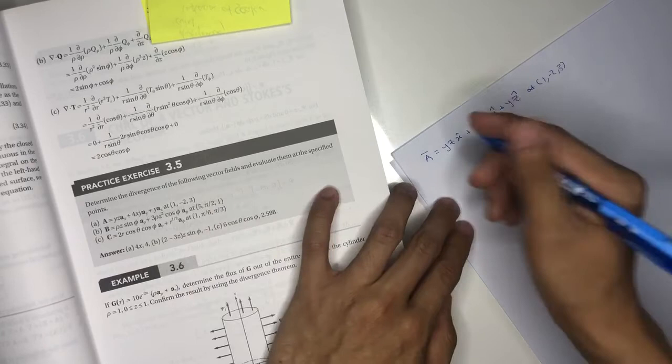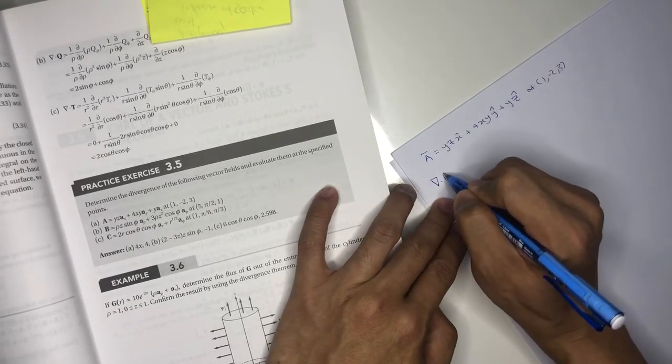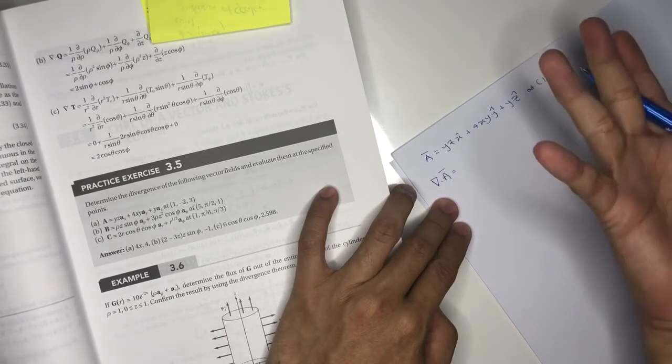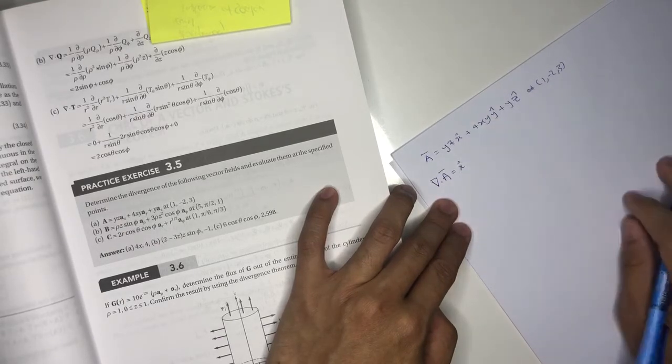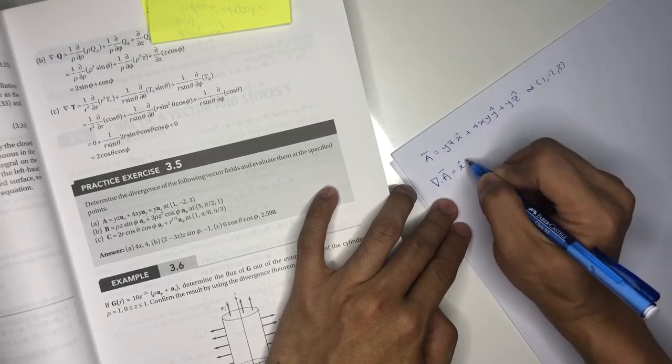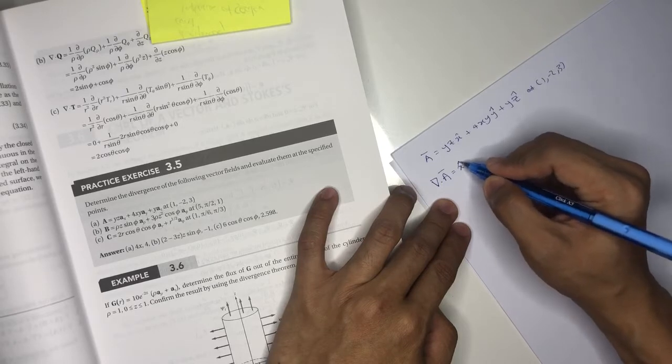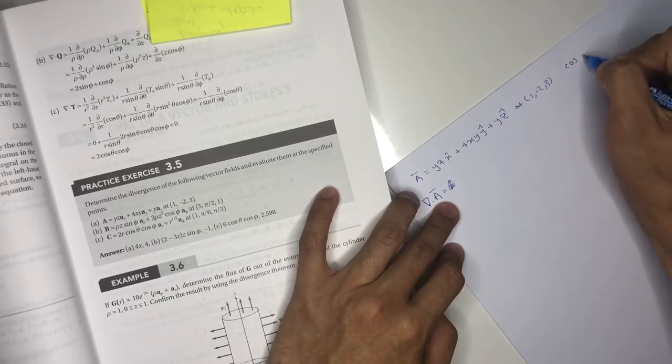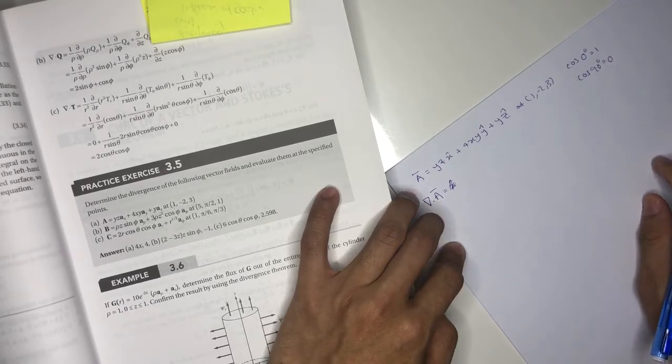So now, del dot A. You see x, y, z, right? So it is Cartesian coordinates. Remember just now, cos 0 means parallel, which is 1, and cos 90 is 0.